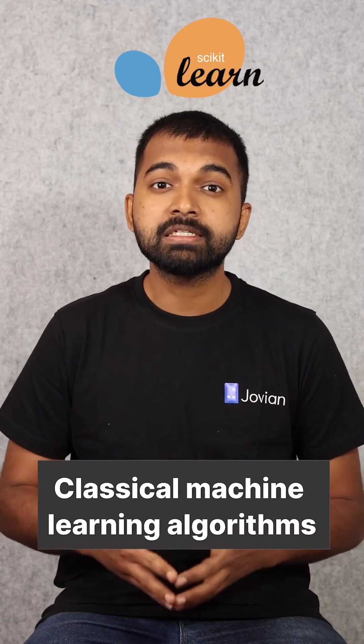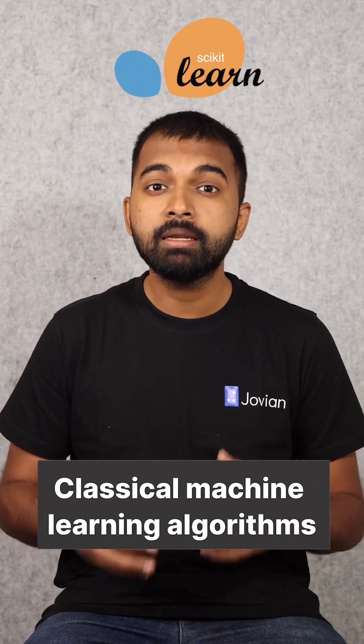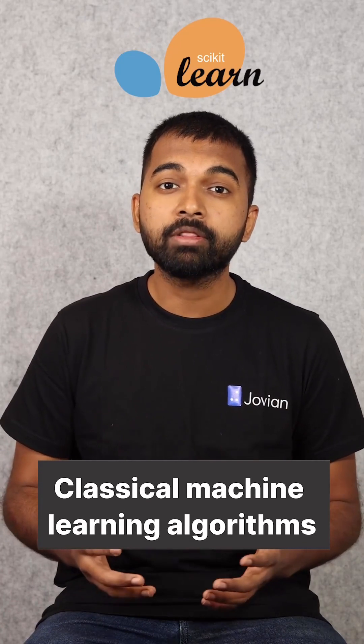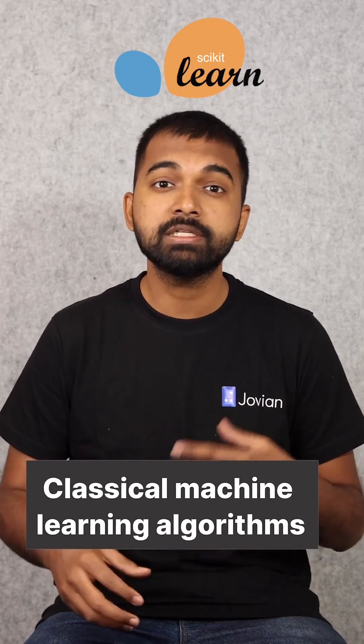Number four: Scikit-learn. This is the go-to machine learning library in Python, and it provides many algorithms like linear regression, logistic regression, decision trees, random forests, and many more.